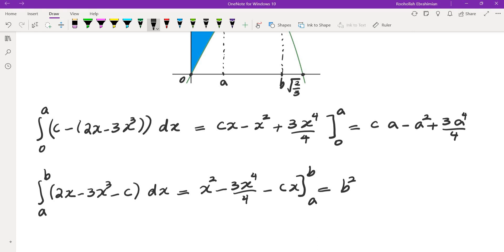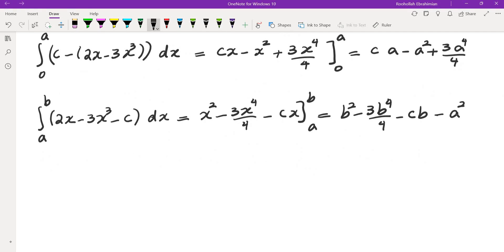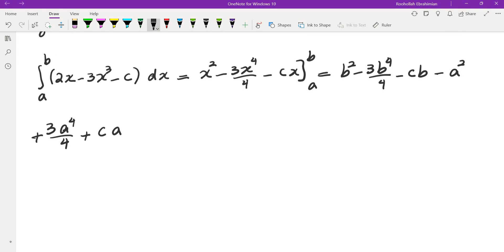Substituting we get b squared minus 3b to the fourth over 4 minus cb minus a squared plus 3a to the fourth over 4 plus cA. Now these two are going to be the same.